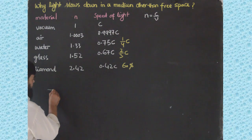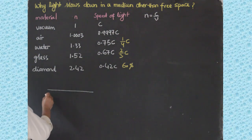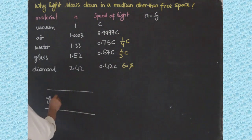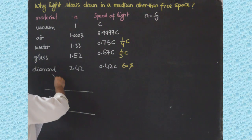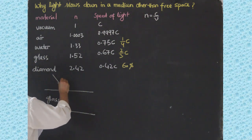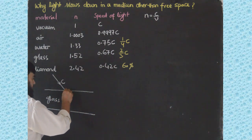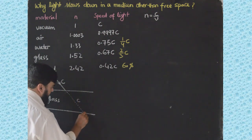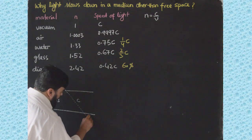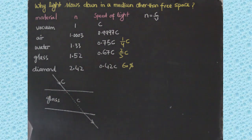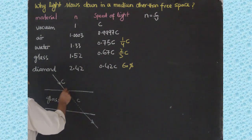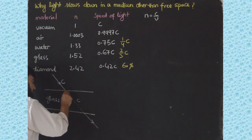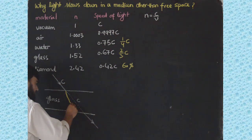Consider a medium such as glass. Light is travelling inside this glass — it comes with speed c and hits the surface. The light was supposed to move in a straight line with the same speed c and exit with the same speed c. But what actually happens is that the light refracts, turns, and travels with a reduced speed inside the glass.